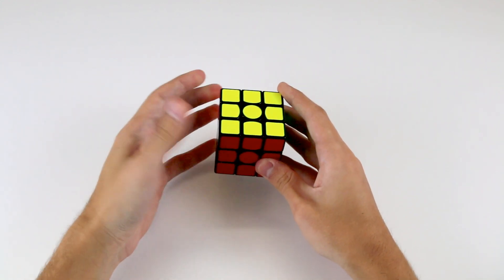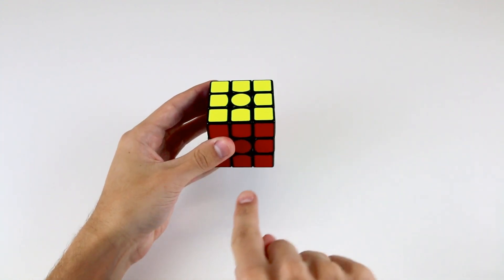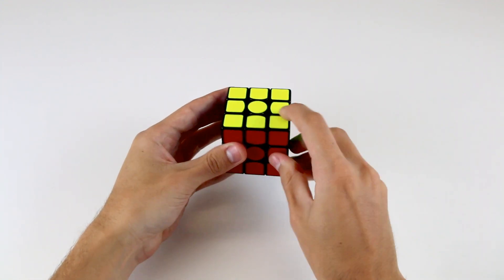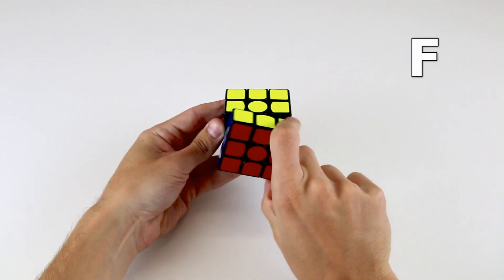So the easiest way to tell which is clockwise and which is anti-clockwise for a particular side is to look at the side front on, and then make the turn. So for example, an F is like so, because we're turning it clockwise.